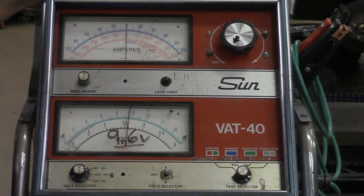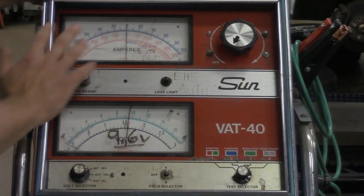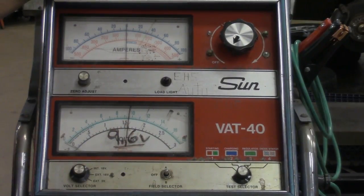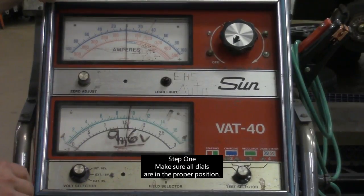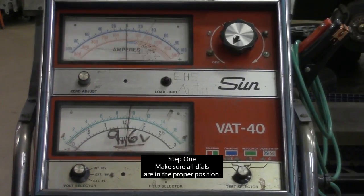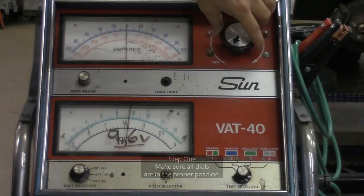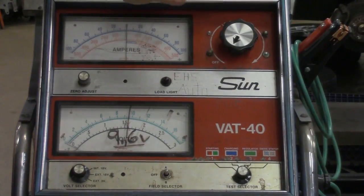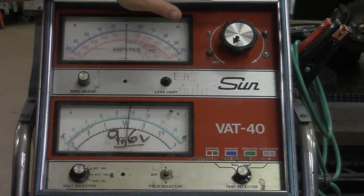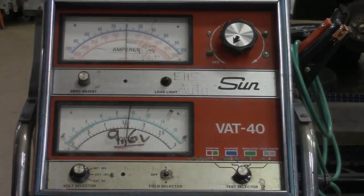The first thing we need to start off with is making sure the VAT40 is set up correctly. This one's old and a little beat up, but it still works perfectly fine. First thing I want to do is make sure my load increase knob is turned all the way to the off position. I don't want any form of load to be put on the battery while performing this test. Just make sure that it's in the off position.